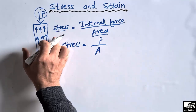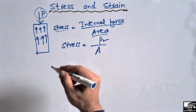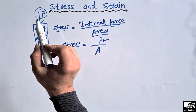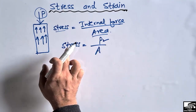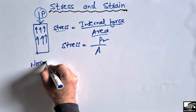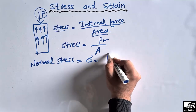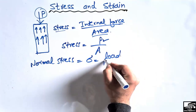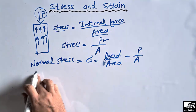It should be kept in mind that P is basically the internal resistance — the internal forces created inside an object. This type of stress is called normal stress. Its formula is: Normal Stress = P divided by A, where P is the applied load and A is the cross-sectional area.